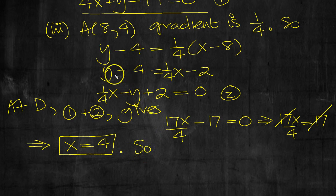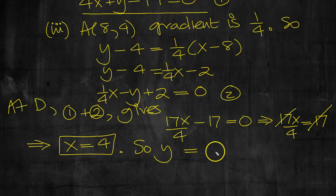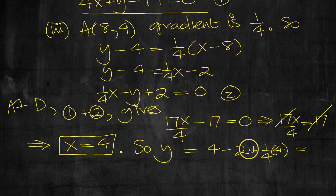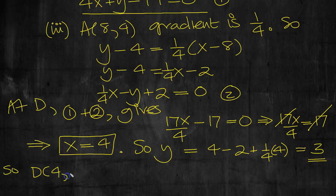So what does Y equal then? Y here from here will equal, X is 4, so 4 minus 2 plus 1 quarter times 4, which is 1. Plus 4 is 5, minus 2 is 3. So Y equals 3. So D has coordinates then 4 and 3, which is what we wanted to show.